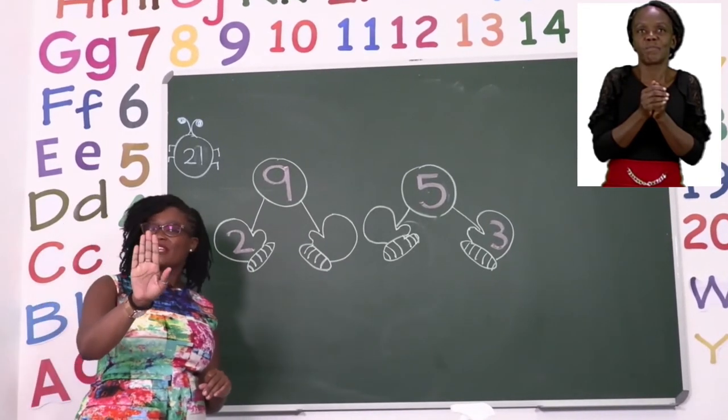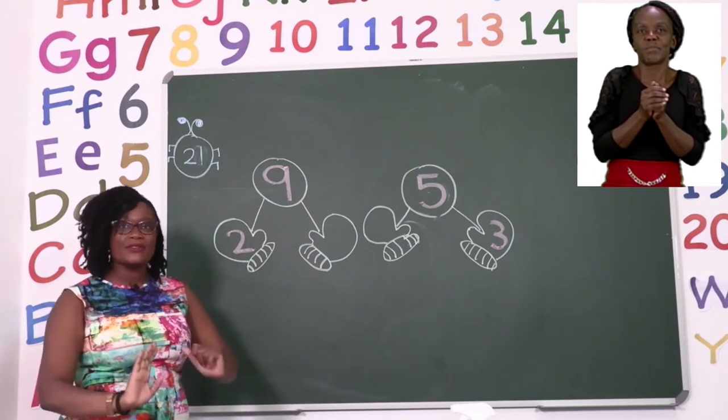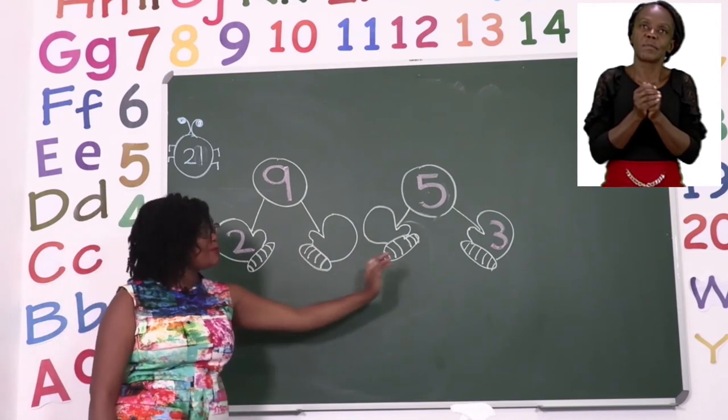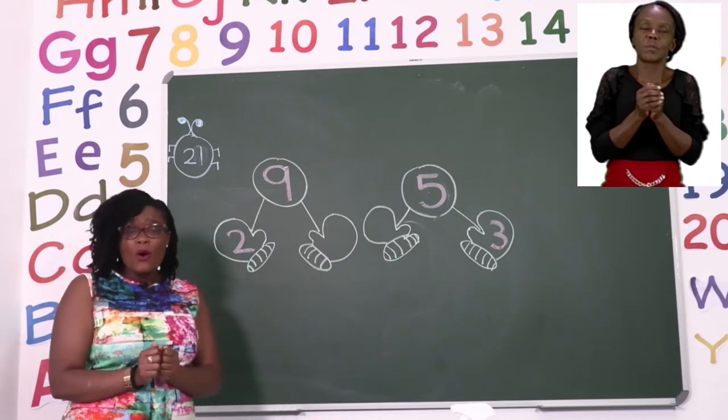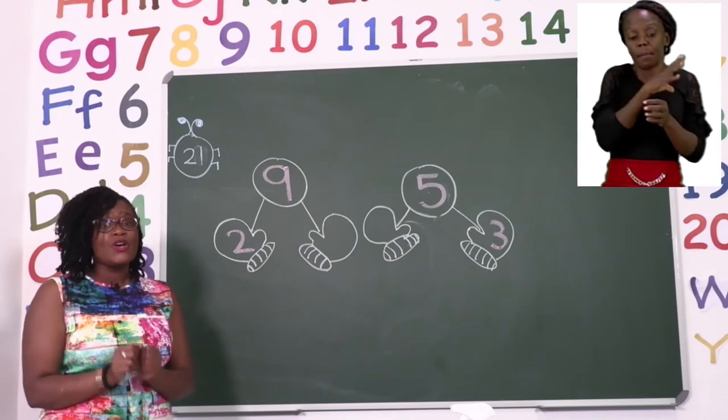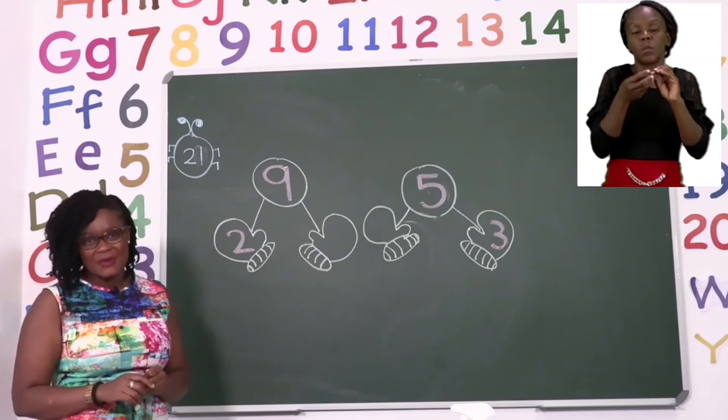Gloves is when you can actually see the fingers. But mittens is when it's all covered round. So we have our mittens with missing numbers. And remember, August is a month that it starts to get very, very cold. So we need to find the numbers so that we can wear our mittens.